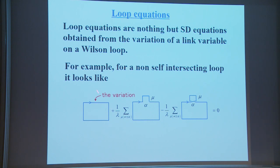If we consider a non-self-intersecting loop and consider the variation about one link, we get an equation. From the action we have two terms and nothing else.